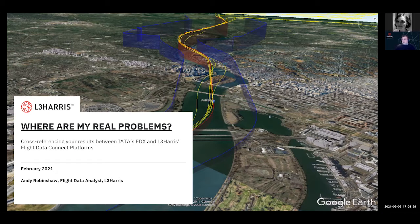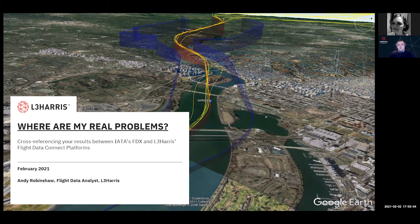What we're going to be talking about today is something that crops up very often. We hear from a lot of operators that they see a certain event that looks like it's trending — in inverted commas — in their statistics. They may be concerned about that event, particularly if they have a small data sample. We'll look at how to get the most out of the Flight Data Connect platform and cross-reference it with IATA's FDX program.